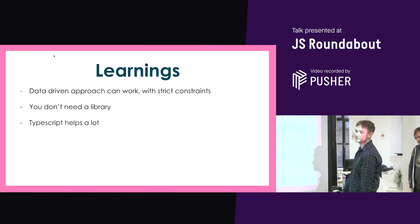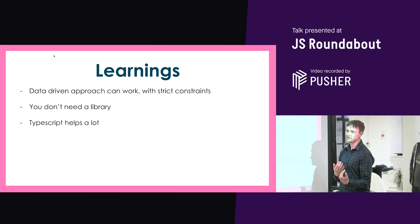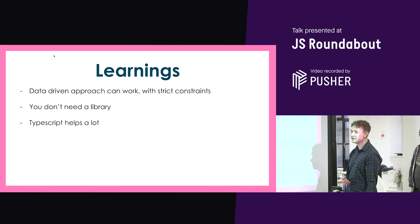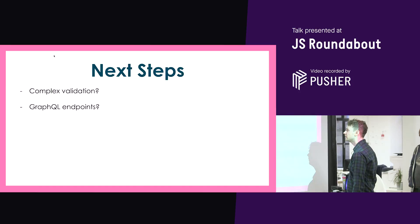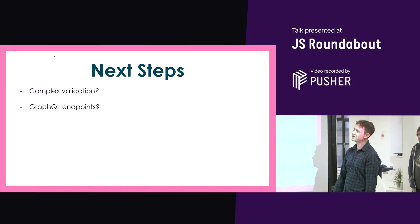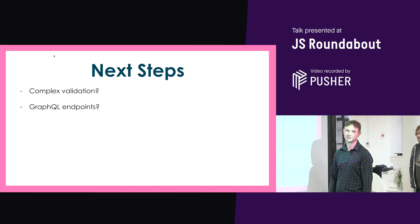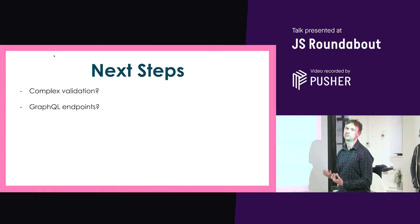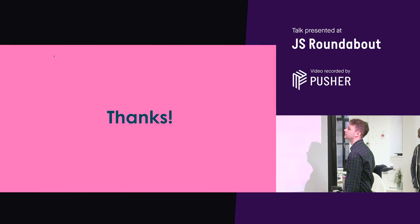Learnings we've got so far with this approach: with pretty strict constraints, this seems to be working for us. You can skip the library if you don't want to add another huge library to your project, and TypeScript is very good at telling you what you can and can't do if you set it up right. Next steps for us are trying to work out how we deal with complex validation, because we've just skipped that for now, and it seems like this would work quite well with some kind of GraphQL approach, but we haven't really looked into that yet. Thanks.